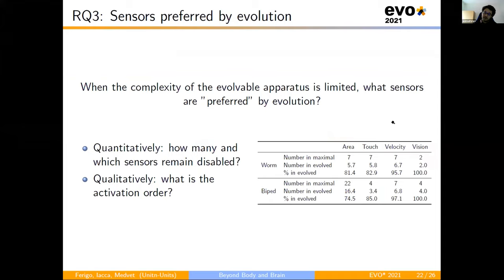For the quantitative aspect, we see that on one hand, the vision sensor, the lidar, seems to be the most preferred with 100% activation for both the shapes, while on the other hand, the velocity sensor seems to be the one that is most disabled, in particular for the biped. This can be due to two motivations. The first one is that the velocity sensor is the most numerous, and so it's more probable that it remains disabled. On the other hand, it can be that, and what we think, the evolution is able to understand this information is redundant, and so maintaining it disabled in favor of enabling other sensors.